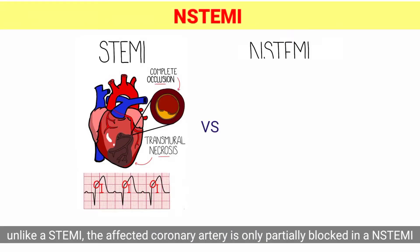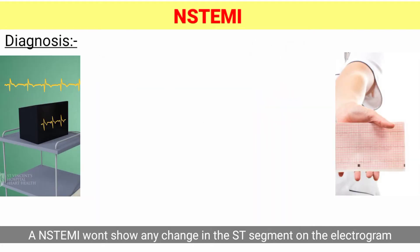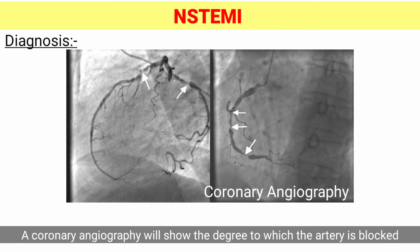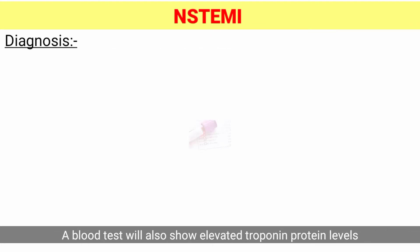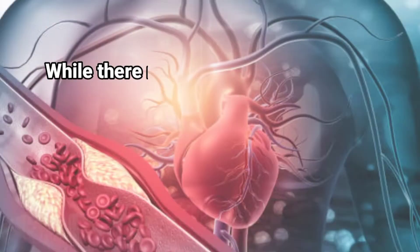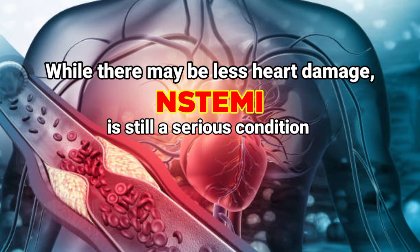Unlike a STEMI, the affected coronary artery is only partially blocked in an NSTEMI. An NSTEMI won't show any change in the ST segment on the electrocardiogram. A coronary angiography will show the degree to which the artery is blocked, and a blood test will also show elevation of the troponin protein levels. While there may be less heart damage, an NSTEMI is still a serious condition.